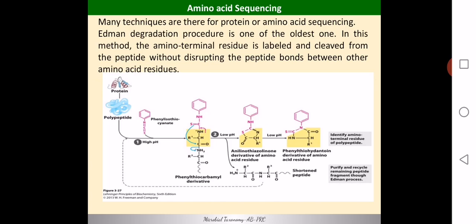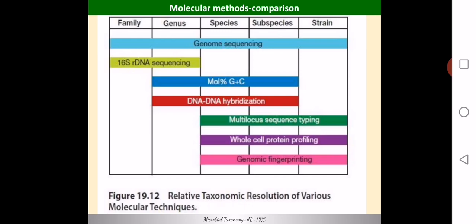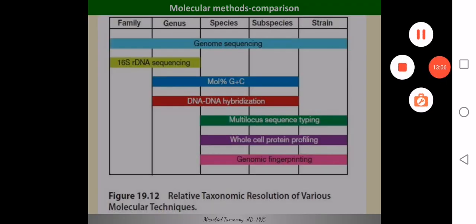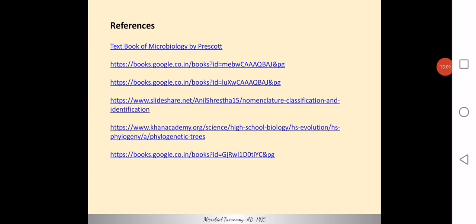In terms of resolution, genome sequencing covers all taxonomic levels down to the strain level — genus, species, and everything below. 16S rRNA or rDNA sequencing helps up to the genus level, while G+C content determination and hybridization help at the species level. This gives a comparative overview of the resolution of the various molecular methods used in microbial taxonomy.